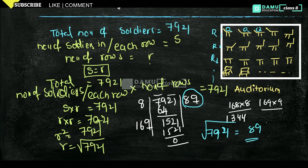That is the answer. So how many soldiers are there in each row? 89. And how many rows are there? 89. That is the meaning. Thanks for watching. Please subscribe.